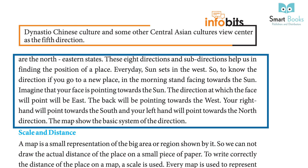These eight directions and sub-directions help us in finding the position of a place. Every day the sun rises in the east and sets in the west. To know the direction in a new place in the morning, stand facing the sun — your face points east, your back points west, your right hand points south, and your left hand points north.